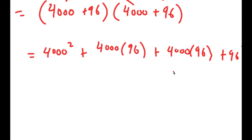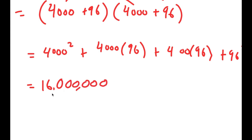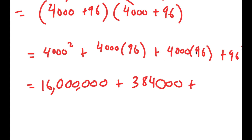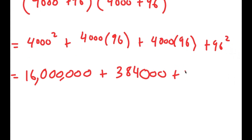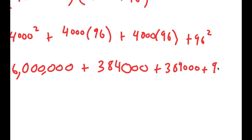Using the distributive property, I get 4,000 squared plus 4,000 times 96 plus 4,000 times 96 plus 96 squared. Now, 4,000 squared: 4 squared is 16, and 1,000 squared has 6 zeros, so I add 6 zeros to get 16,000,000. Then 4,000 times 96: 4 times 96 is 384, so adding three zeros gives 384,000. And 96 squared is 9,216.